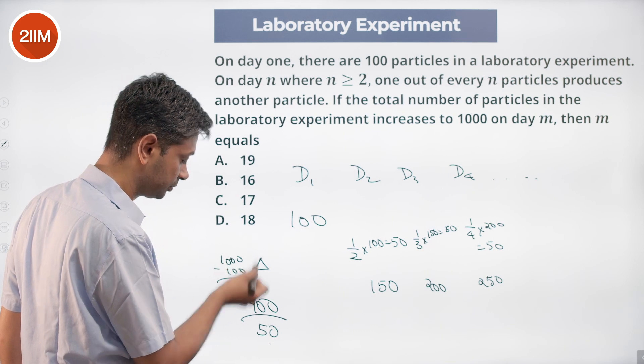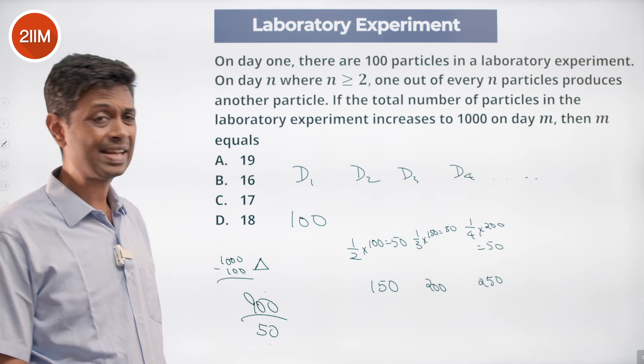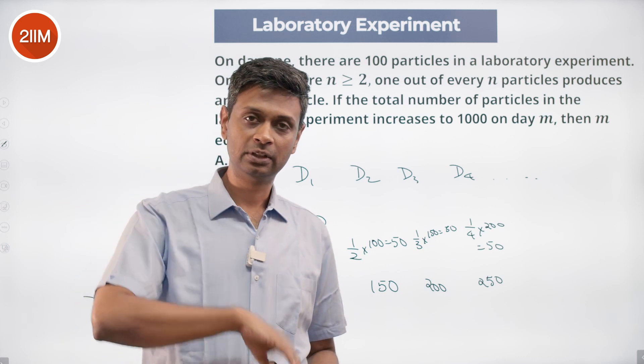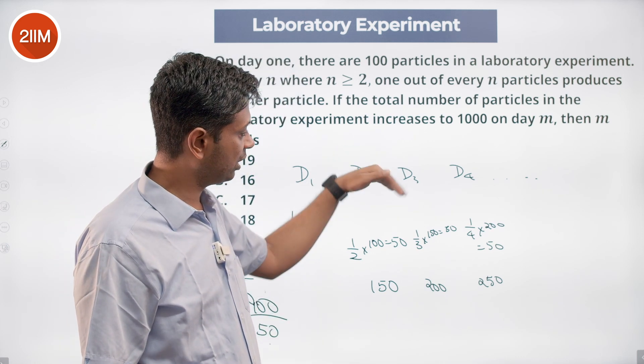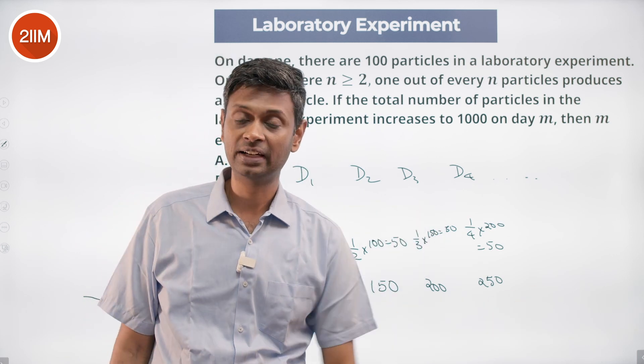We need to add 900. 900 divided by 50 is 18. We add 18 times. On day one, we have 100. Day two, we add 50. Day three, we add 50. We add for 18 days, so our total number of days is 19.